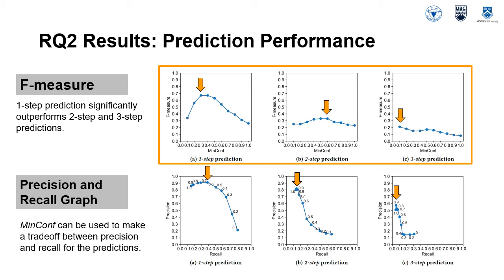The three figures on the top present the resulting F-measure for 1-step, 2-step, and 3-step predictions. Each point represents the F-measure for all predictions across code context models with min-conf ranging from 0.1 to 1. The 1-step prediction achieves the highest F-measure around 0.7 where min-conf equals 0.3, which is over 0.3 for 2-step prediction at min-conf equals 0.6, and over 0.2 for 3-step prediction at min-conf equals 0.1.